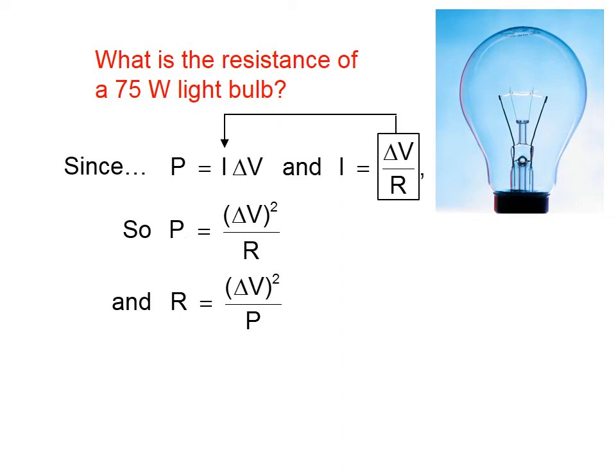A light bulb in the United States is screwed into a standard electrical socket, which has a 120 volt pressure difference. Square that, divide by the 75 watts, and the resistance of this light bulb is about 190 ohms.